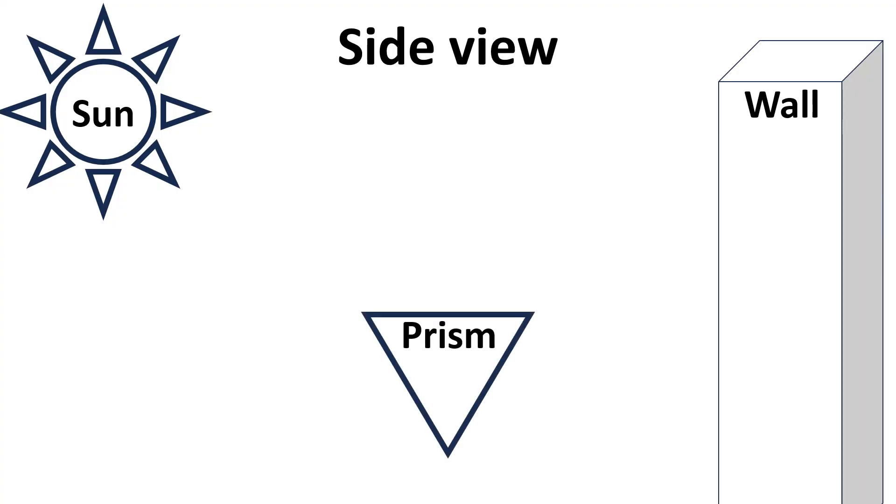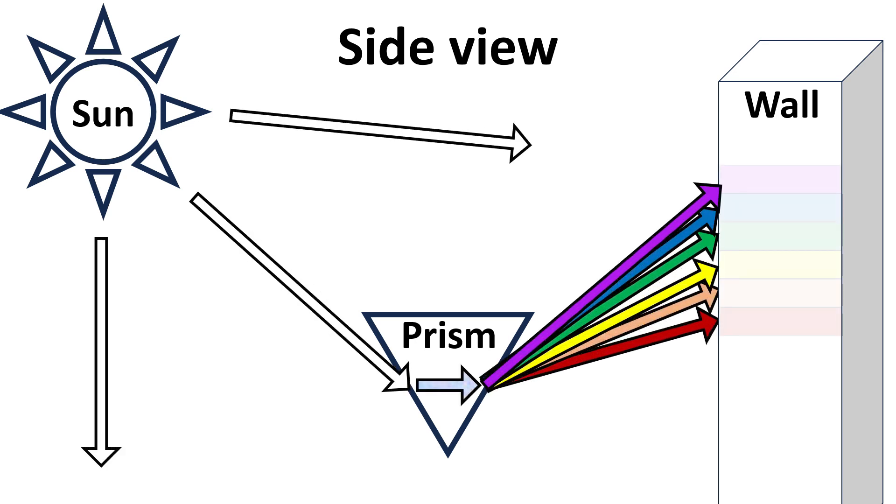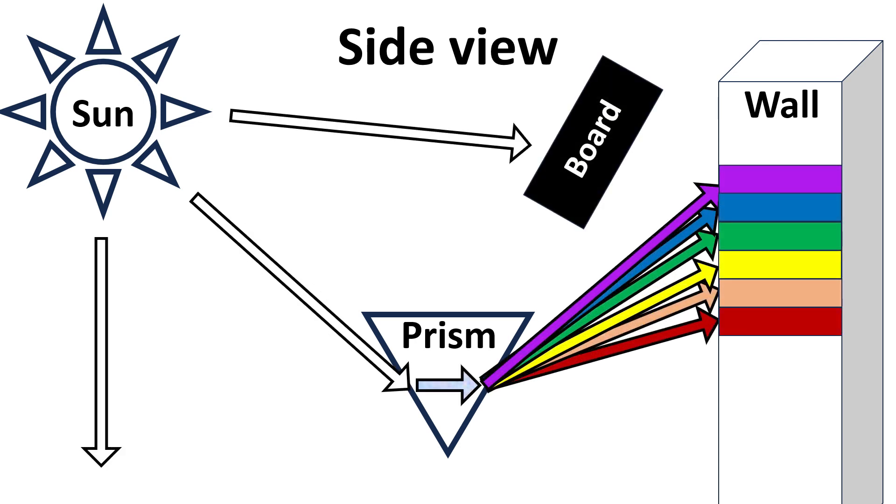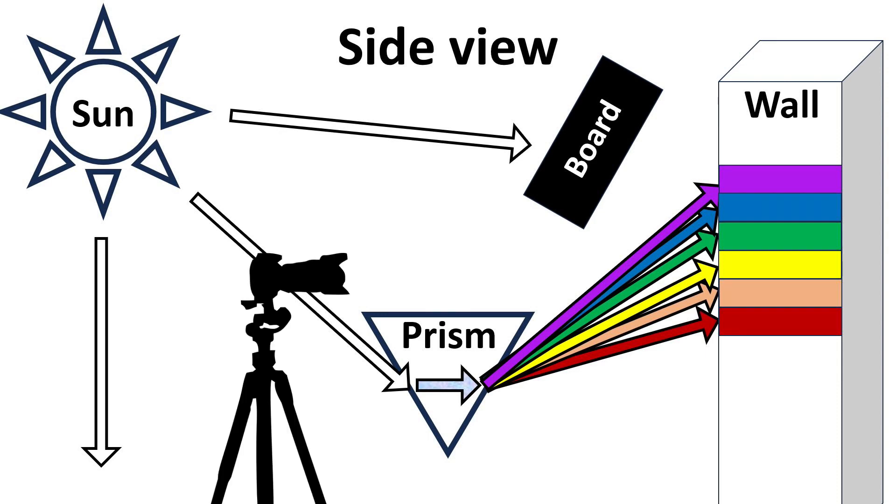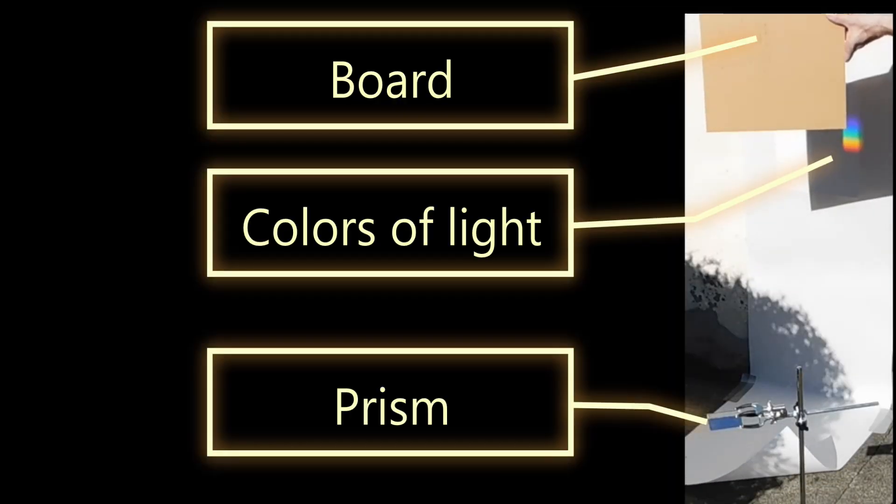This is our experiment's setup. We put the uncovered prism upside down, so the spectrum of colors would hit the side of a building. We held a board near the wall to block direct sunlight on the wall, so there'd be a shadow on the wall to make the colors easier to see. The views you'll see are taken by a camera placed behind the prism and aimed at the wall.